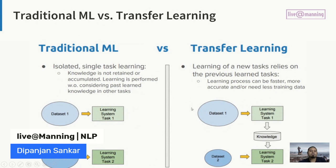Traditional machine learning happens in silos where every task has a dataset and you build models from scratch on that dataset. When you have a new task to solve, you again build a model from scratch on a new dataset. Learning is not shared across tasks. But in transfer learning, if you build a model on a dataset and solve a specific task, you can use that prior knowledge to solve a new problem with new data — you don't always train models from scratch.